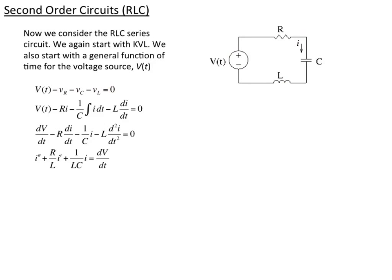In each case, we plug in the IV characteristics. For the resistor, it's just Ohm's law. The voltage across the capacitor is the integral of the current divided by C, and the voltage across the inductor is the derivative of the current times L. Since this equation has both integrals and derivatives, we take the derivative of the whole equation to get dV/dt, R·di/dt, the derivative of the integral of i is just i, and the derivative of i becomes the second derivative — giving us a second order differential equation.